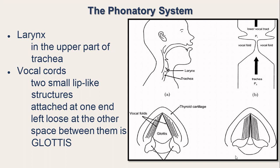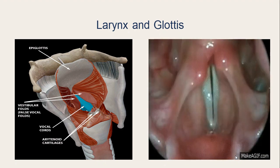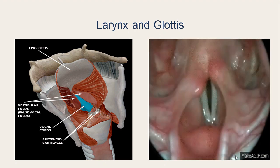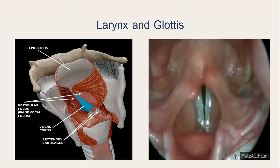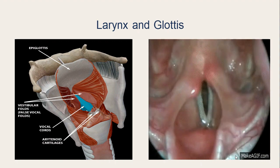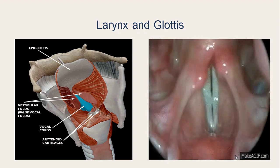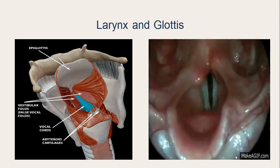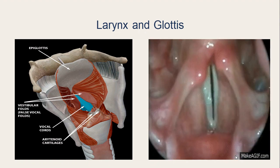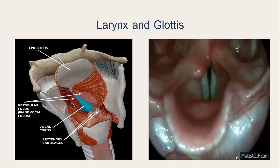Because of this, the vocal cords can be brought close to each other or moved far away from each other. When they are moved far away from each other, there is a space between them — this space is called the glottis. The larynx and the vocal cords are located in the throat, and the space between the vocal cords when they are wide apart is called the glottis.